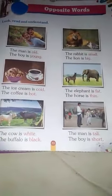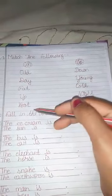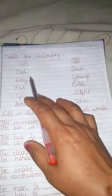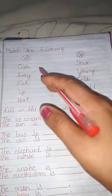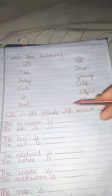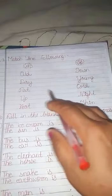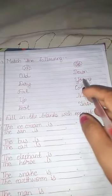We will create some sentences. Match the following — Column A to Column B. Match the following. I have told you: Old, Day, Night, Fat, Thin, Up — match these opposite words.